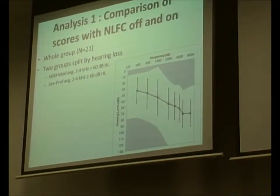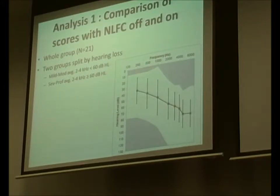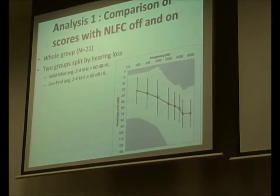I'll first show the analysis with the whole group, because although my research question was about whether benefit is related to hearing loss, there are many studies that haven't shown benefit with frequency compression at all. So the first step was to ask whether frequency compression provides benefit for the people in my study. Then I split the group in two based on hearing loss using the World Health Organisation classification at 2 and 4 kHz — because the cutoff frequency is around 1.5 to 3 kHz, most of the compressed signal falls within this 2 to 4 kHz area, which I theorised is an important region for frequency compression hearing aids.